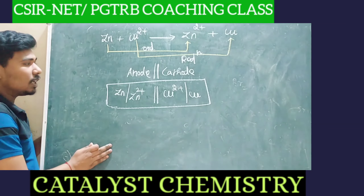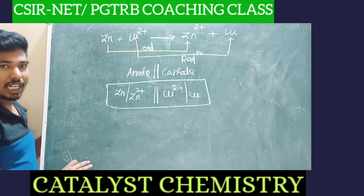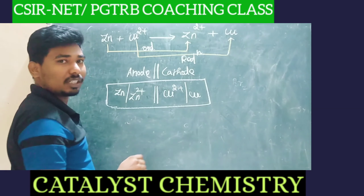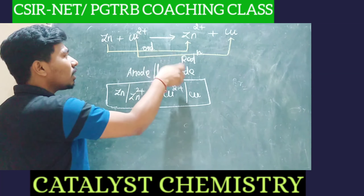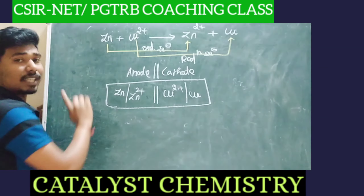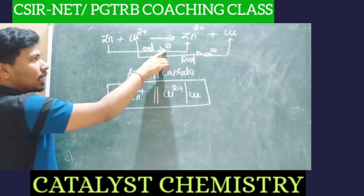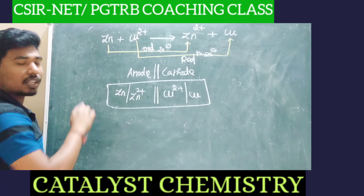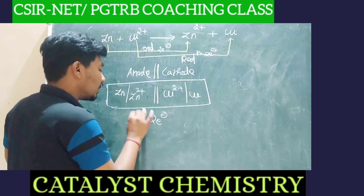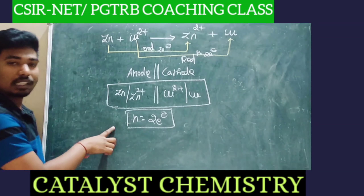How many electrons are transferred? Zinc goes to Zn²⁺ — it lost 2 electrons. Loss of electron is oxidation. At the same time, copper gained 2 electrons. Both are the same number of electrons — in the first half, 2 electrons lost; in the second half, 2 electrons gained. Total number of electrons transferred during this reaction is 2 electrons. This is where the Nernst equation calculation is very helpful.